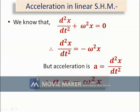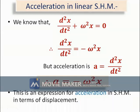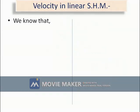We can obtain expressions for acceleration, velocity, and displacement of a particle performing SHM in terms of displacement x and time t. First, we will obtain the acceleration of a body performing linear SHM. From the differential equation, rearranging: d²x/dt² = −ω²x. Since d²x/dt² is the acceleration, we get: a = −ω²x. This is the expression for acceleration in terms of displacement.